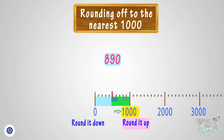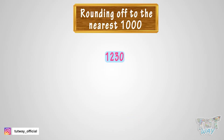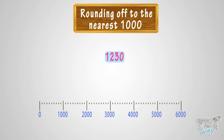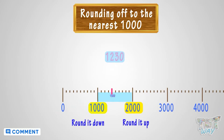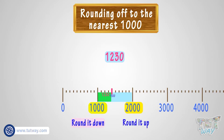Let's take another example: 1230. We have to round 1230 to the nearest 1000. See the number line. Where can you fit 1230? It is somewhere between 1000 and 2000. As 1230 is below or before the 500 mark, we will round it down to 1000. So 1230 rounds to 1000.